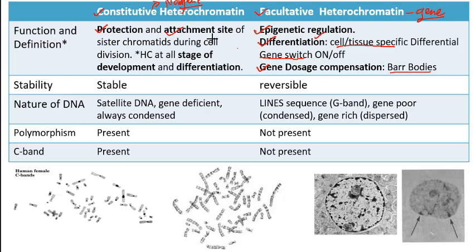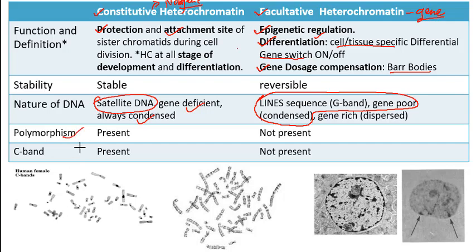There is some gray area between the two concepts. The constitutive heterochromatin contains no genes — this is the satellite DNA region, with tandemly repeated sequences present in the chromosome. Because of these tandem repeats, there is polymorphism: one individual may have 1,000 tandem repeats and another may have 1,100. Even within the same individual, one maternal chromosome may have 1,000 repeats and another may have 100. This polymorphism is present in constitutive heterochromatin due to non-gene-containing tandemly repeated sequences, whereas polymorphism is not present in facultative heterochromatin.